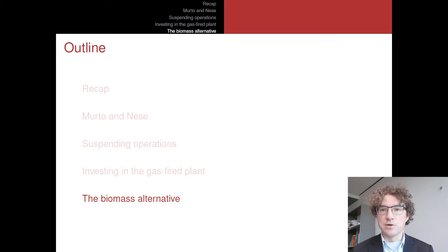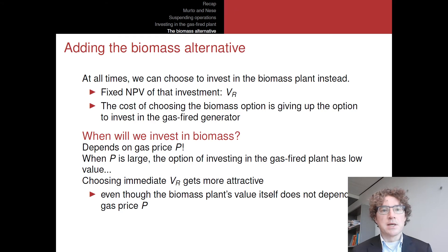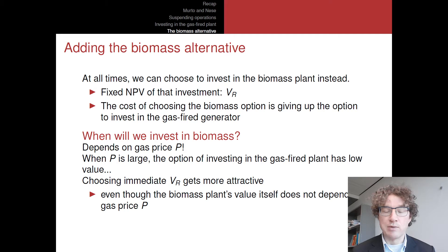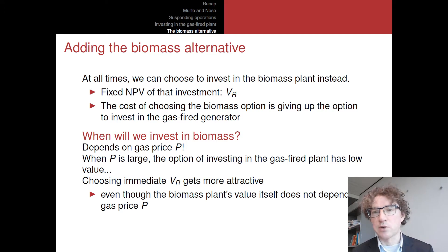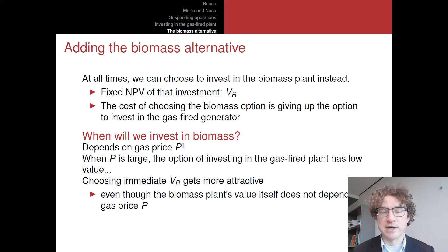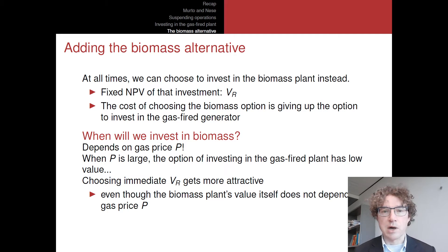Let's go to the full problem that we were to address — we're adding the biomass alternative in there as well. Instead of just having the option to invest in a gas-fired plant when we have this green field in which you can make the investment, we might instead do the investment in the biomass plant. If we do that, we're given basically what the total NPV is in itself. This does not depend on the price of gas, so it's just a fixed number, and this fixed number of that investment is called V of R, where R stands for renewable.